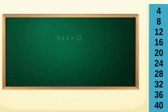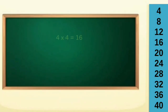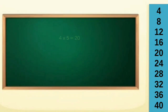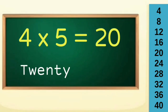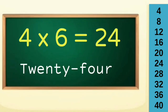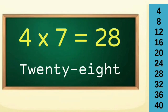Table of four: four ones are four, four twos are eight, four threes are twelve, four fours are sixteen, four fives are twenty, four sixes are twenty-four, four sevens are twenty-eight.